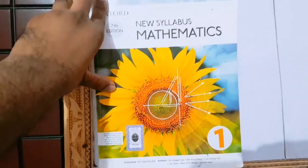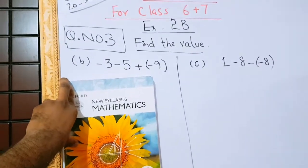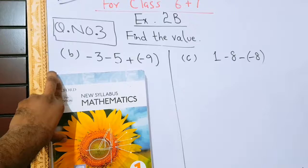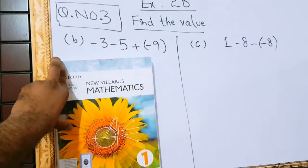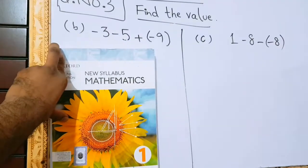Okay, let's do question number 3, Exercise 2B. Come to Exercise 2B and question number is 3, part b. I have left part a for the students to solve themselves. So let's start the lecture properly.